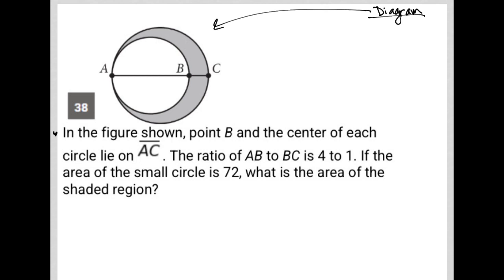The ratio of AB to BC is 4 to 1. So when I label this diagram, I'm going to say that this distance, this diameter A to B, is 4X, and this distance between B to C is just X, because that would reflect what this 4 to 1 ratio means.